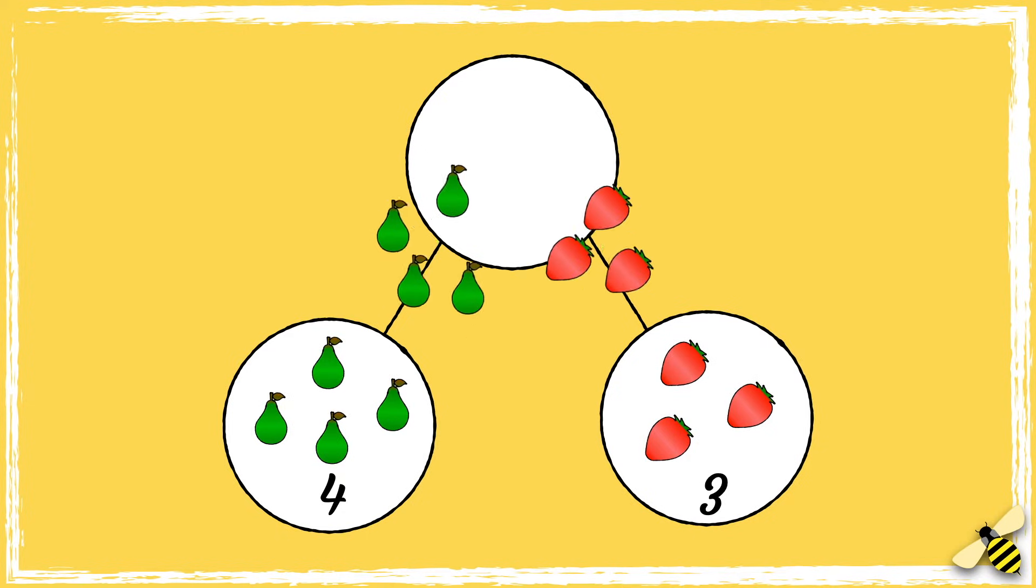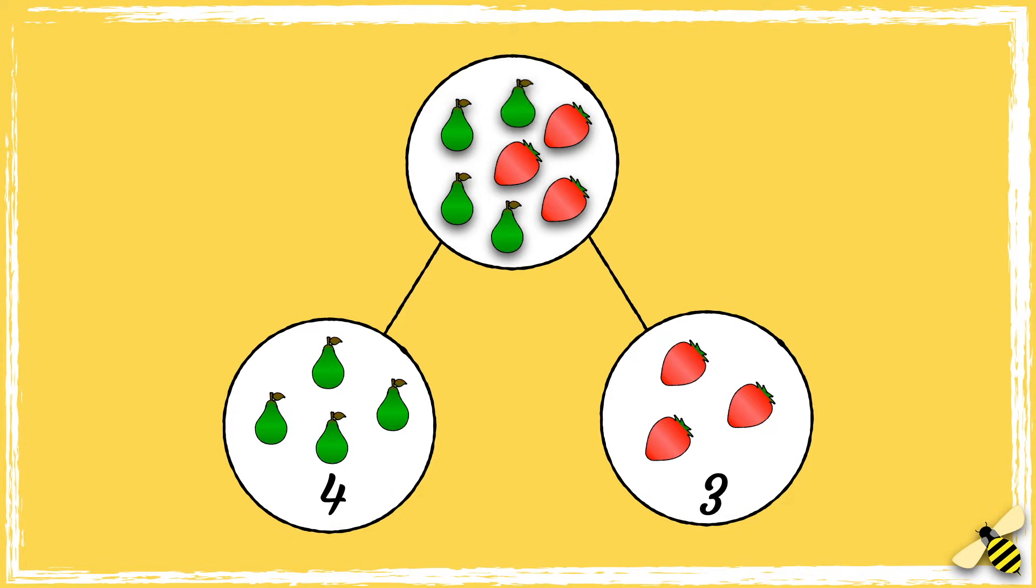How many all together? One, two, three, four, five, six, seven.